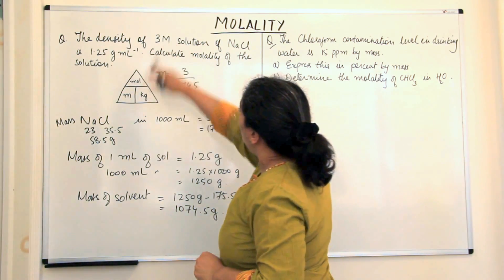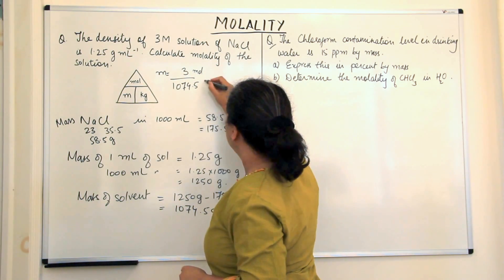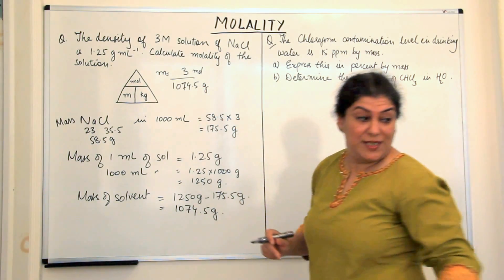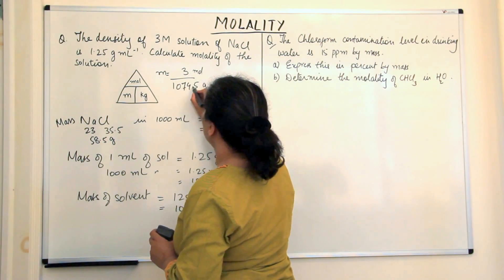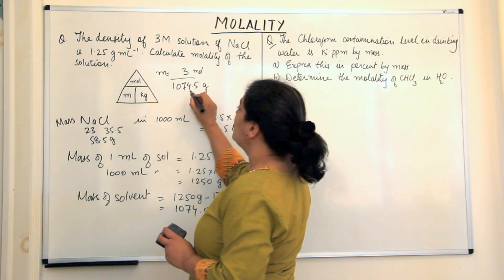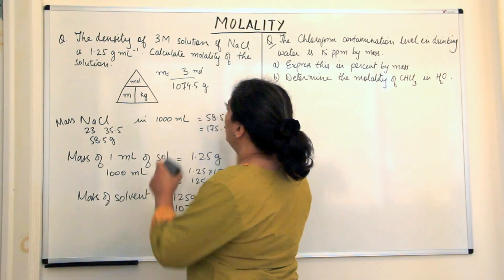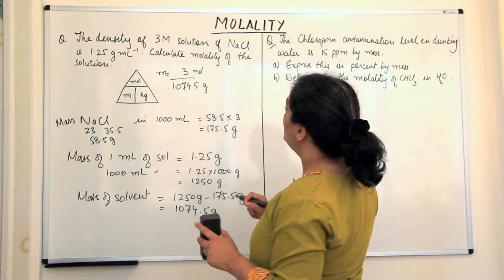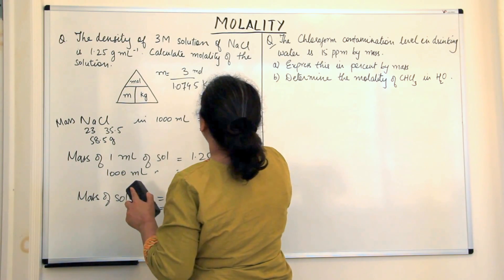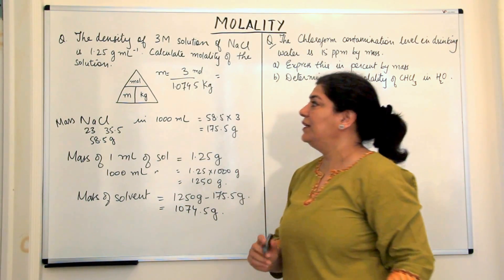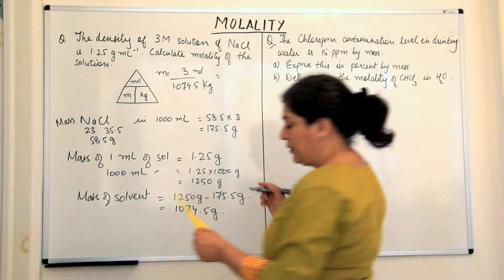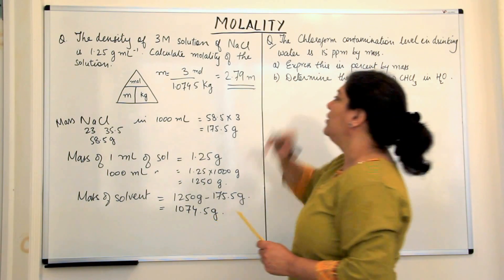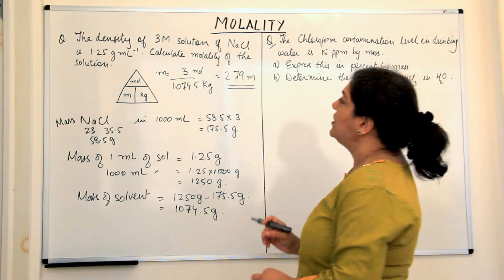Molality is equal to 3 moles of solute. The mass of solvent is 1074.5 grams, which we convert to kilograms: 1074.5 g = 1.0745 kg. So molality = 3 moles / 1.0745 kg = 2.79 molal. The molality of this solution is 2.79 molal.